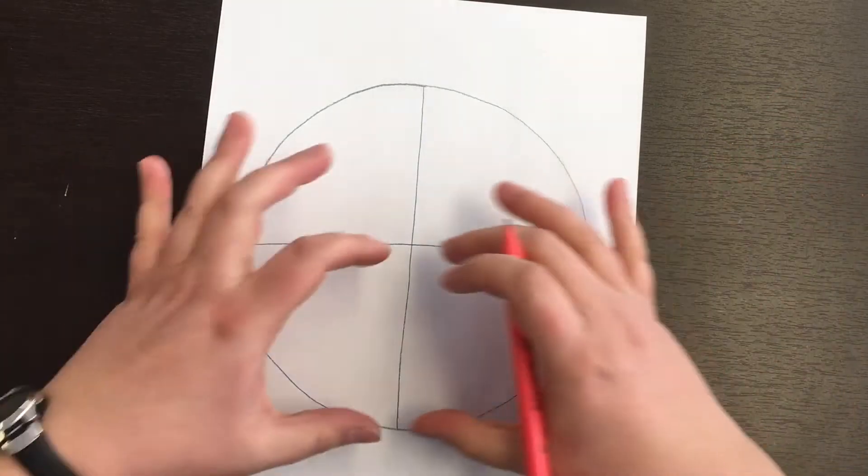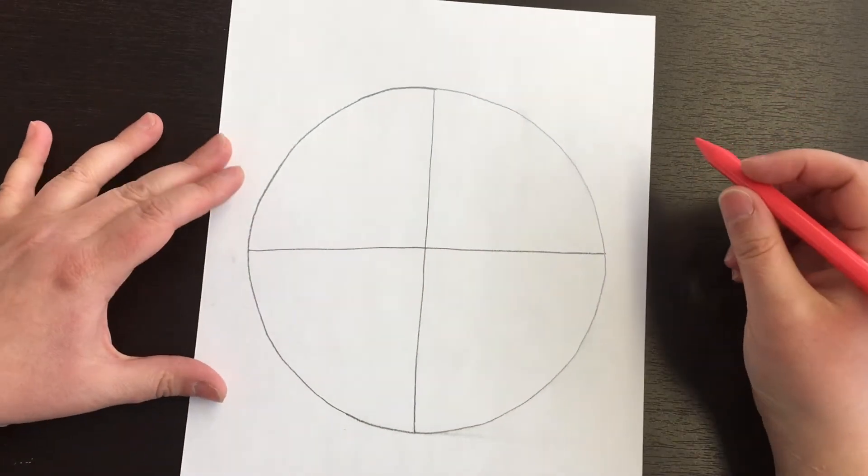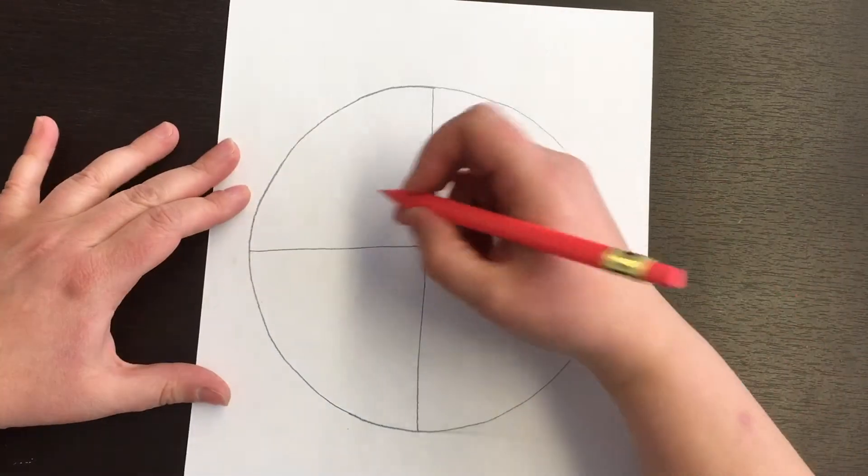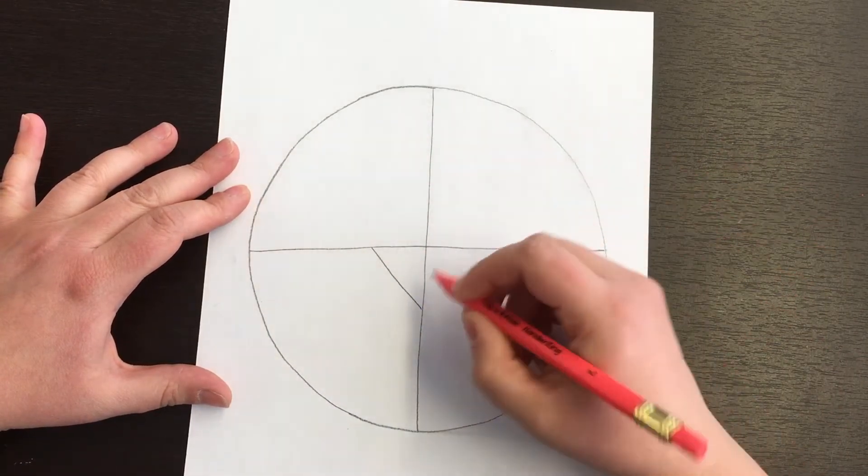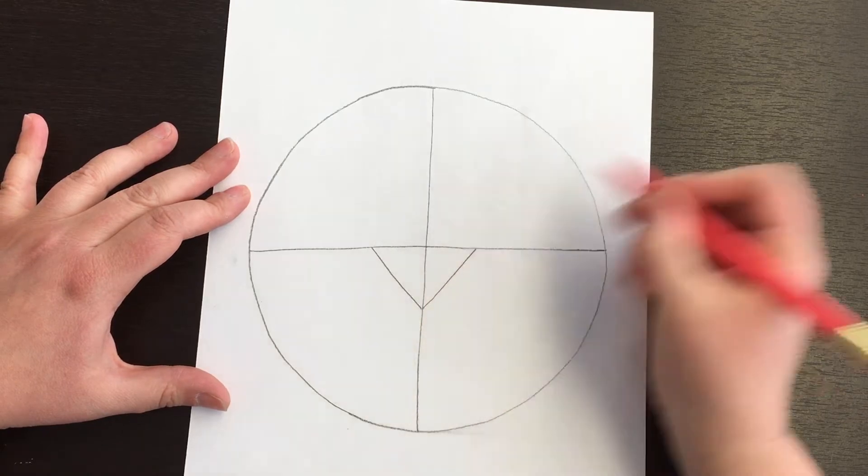Now, we are gonna do the bottom part first. So for our kitty's nose, let's put a V right here. That's our cat's nose, our copycat's nose,